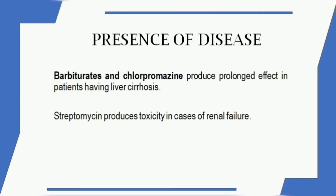Presence of Disease also affects dosing. If a patient already has renal failure, drugs like streptomycin will accumulate. In liver cirrhosis, drugs such as barbiturates and chlorpromazine will have a prolonged effect. Disease conditions change the pharmacology of drugs significantly.